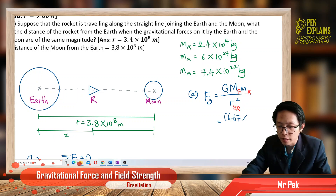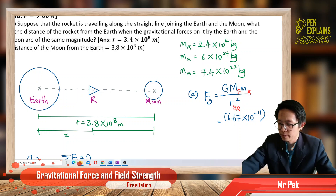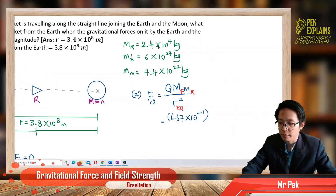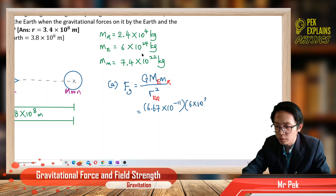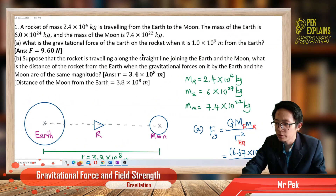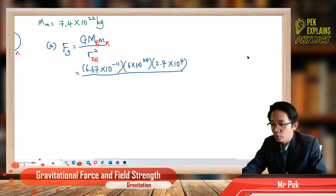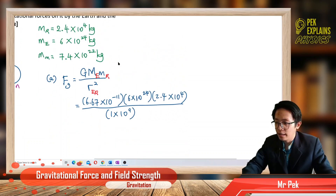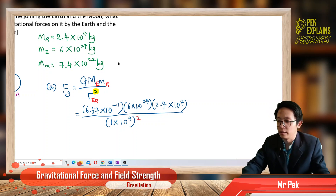G is always 6.67×10⁻¹¹. Mass of Earth is 6×10²⁴, mass of rocket is 2.4×10⁴, divided by the distance between them — 1×10⁹ from the Earth. Don't forget the square — many students forget about it. Remember, you need to square the r. For the vector formula, you have r squared below; for the scalar quantity, no square below.